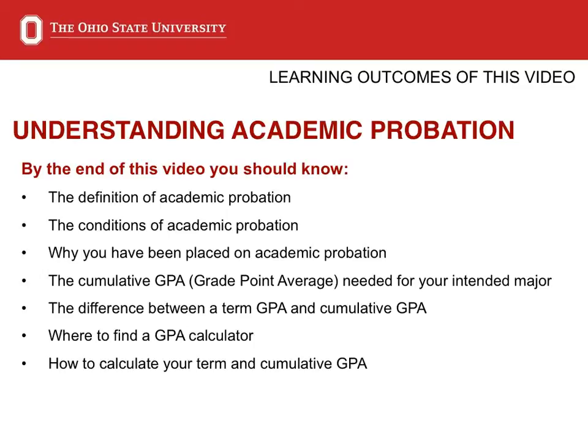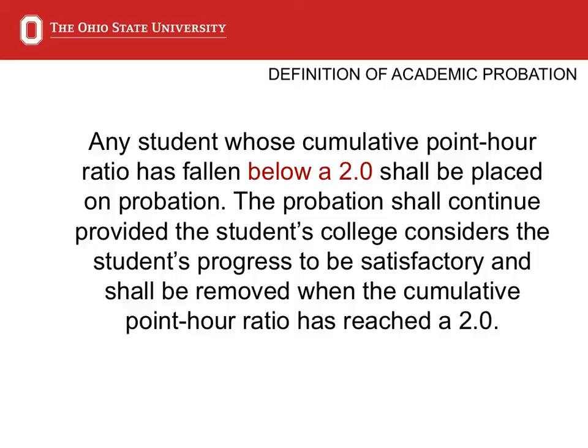So let's begin. Simply put, academic probation is described as any student whose cumulative point-hour ratio has fallen below a 2.0. The probation shall continue provided the student's college considers the student's progress to be satisfactory, and shall be removed when the cumulative point-hour ratio has reached a 2.0. The reason you have been placed on probation is not only because you have fallen under the necessary 2.0 GPA to be in good standing with the university, but it also aids us as advisors to provide further resources to help ensure you have the means to become successful. We can help you determine your strengths as a student, change harmful patterns in study skills or time management, and refer you to resources on campus to improve your academic performance.